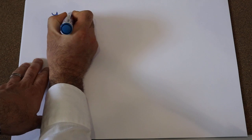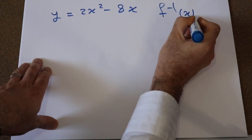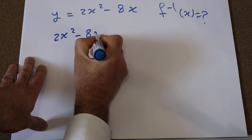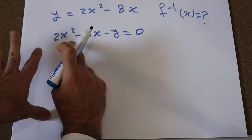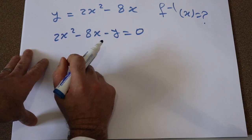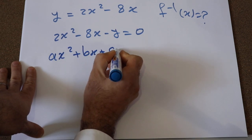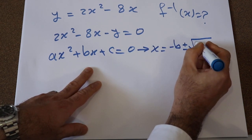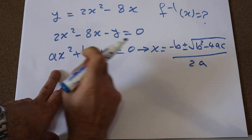Let me solve another example. The function y is defined as 2x² minus 8x. What is the inverse of this function? Here I write it as 2x² minus 8x minus y equals 0. You can solve for x as a function of y using the quadratic formula: for ax² plus bx plus c equals 0, x equals [minus b ± √(b² minus 4ac)] divided by 2a.